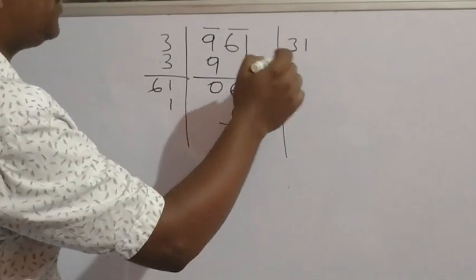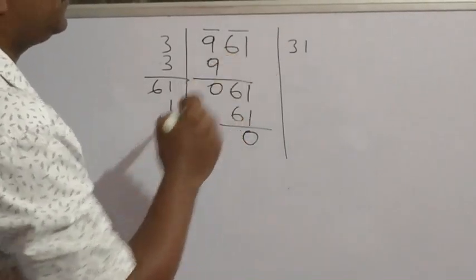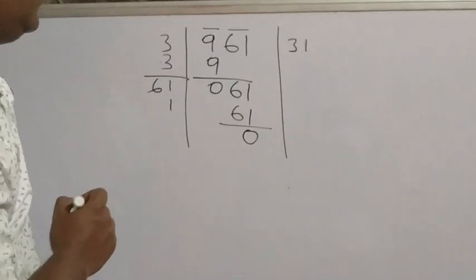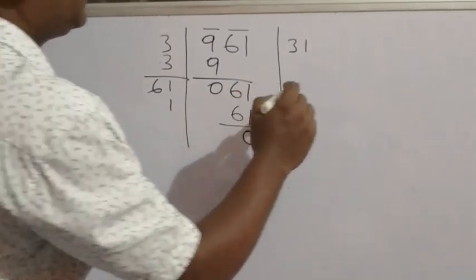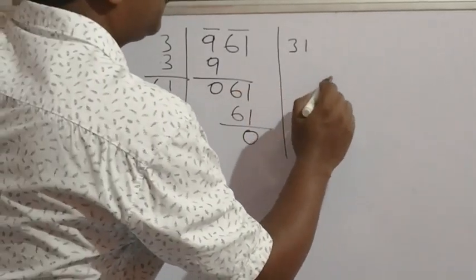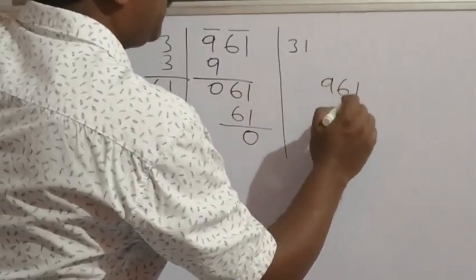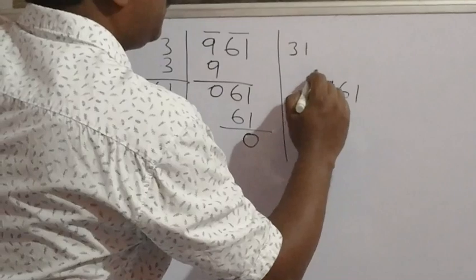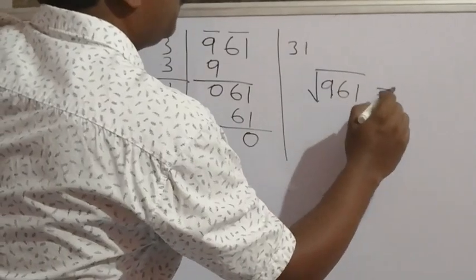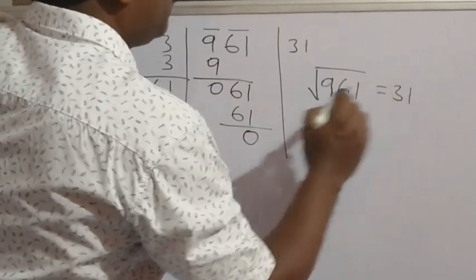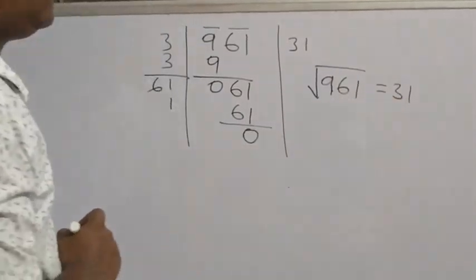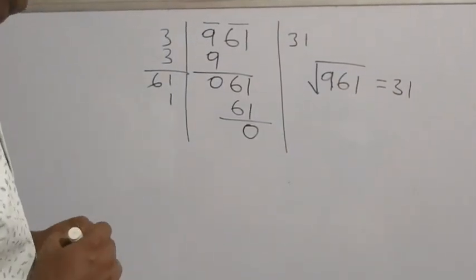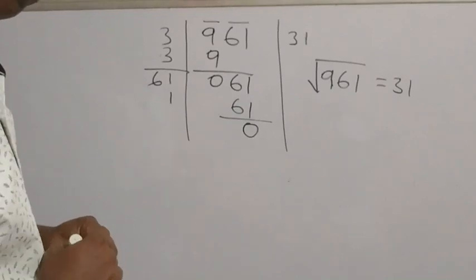So the square root of 961 is 31. This is the long division method.